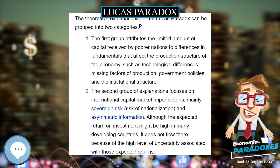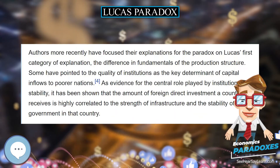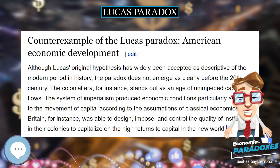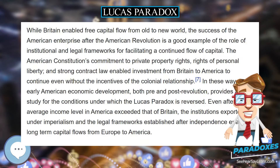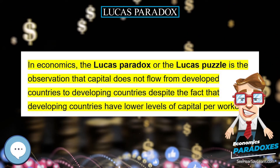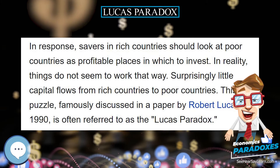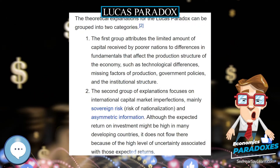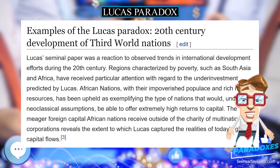Jeffrey Williamson has explored in depth this reversal of the Lucas Paradox in the colonial context. Although not emphasized by Lucas himself, Williamson maintains that unimpeded labor migration is one way that capital flows to the citizens of developing nations. The empire structure was particularly important for facilitating low-cost international migration, allowing wage rates to converge across the regions in the British Empire. For instance, in the 17th and 18th century, England incentivized its citizens to move to the labor-scarce America, endorsing a system of indentured servitude to make overseas migration affordable. While Britain enabled free capital flow from old to new world, the success of the American enterprise after the American Revolution is a good example of the role of institutional and legal frameworks for facilitating a continued flow of capital.